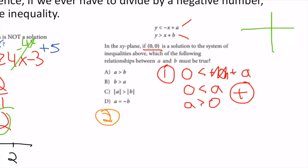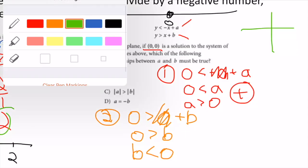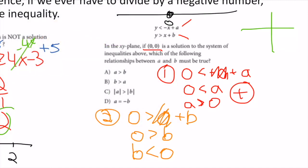For equation 2: 0 > 0 + b, so 0 > b, meaning b < 0. On a number line, a is all positive numbers and b is all negative numbers. Since a is positive and b is negative, a is always going to be greater than b.